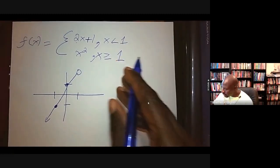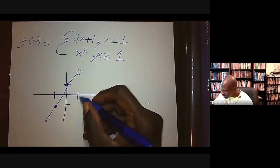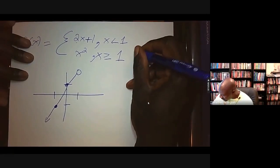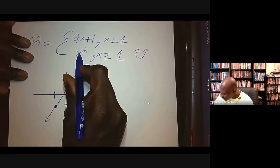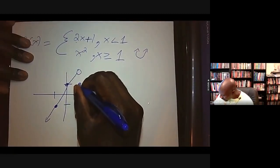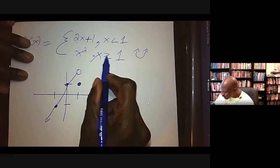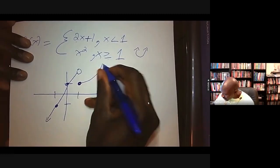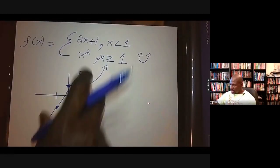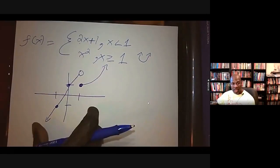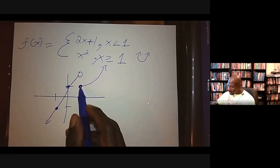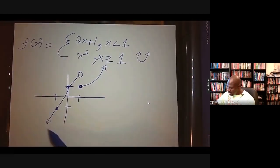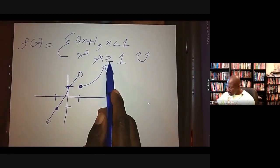For values greater than or equal to one, we use x², which is a parabola. When x = 1, x² = 1, so there's a closed circle at (1, 1) — closed because it's greater than or equal to one. From there the parabola continues. Notice the open circle on the linear piece because it said less than one (not less than or equal to), and the closed circle on the parabola piece because it says greater than or equal to one.